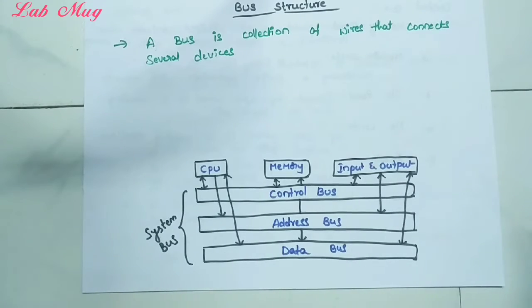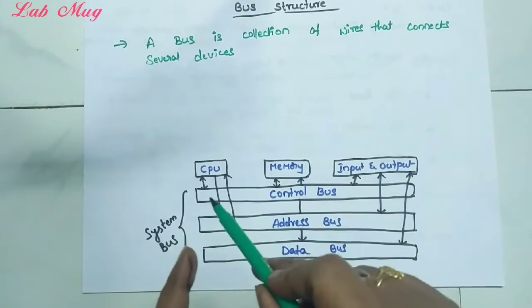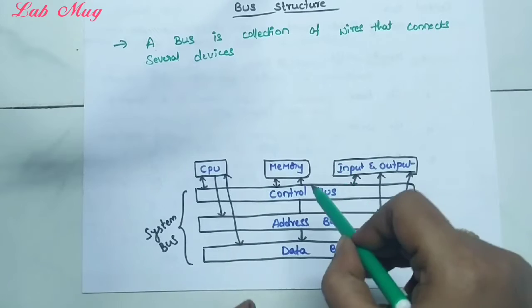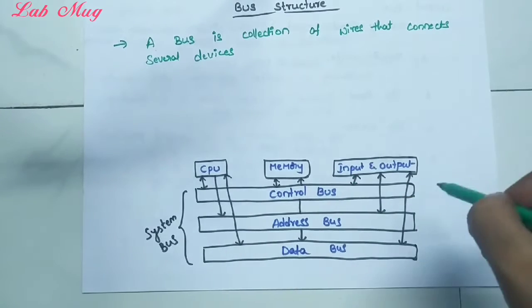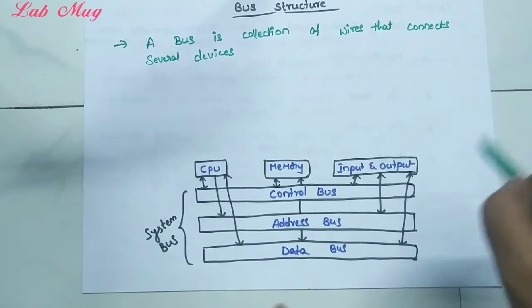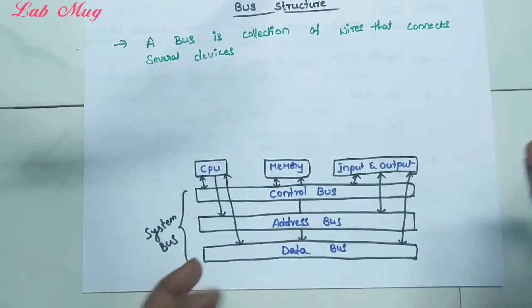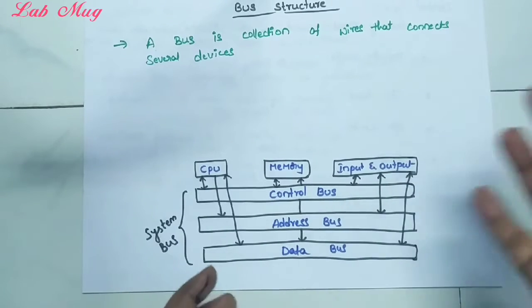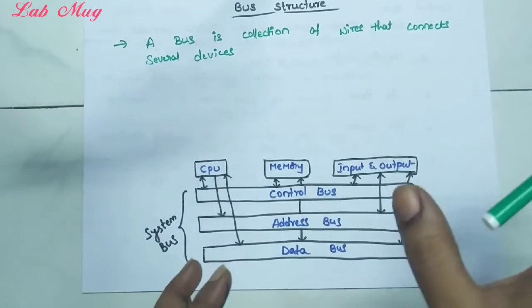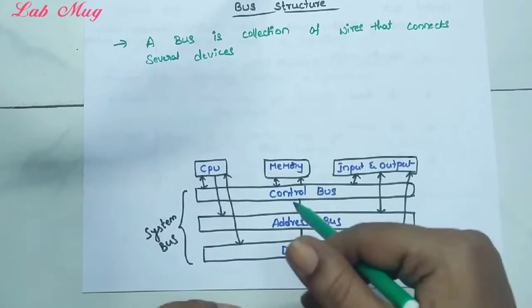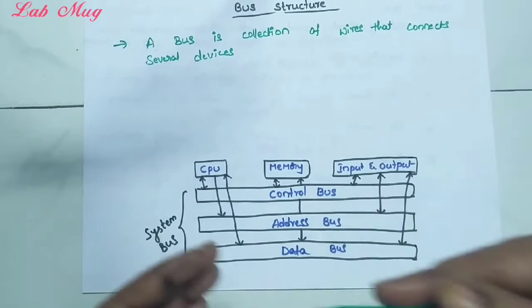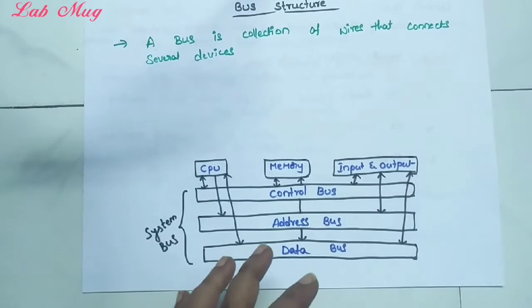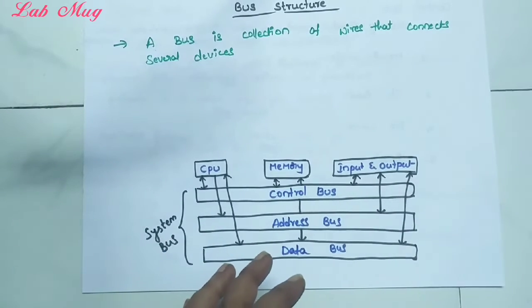Any peripheral devices - many devices are involved: the CPU (central processing unit) is involved, the memory is involved, and the input and output devices are also involved. These three devices use different wires to make these buses - a collection of wires to connect. Not only three devices - input and output devices are many.